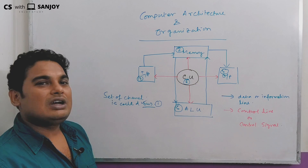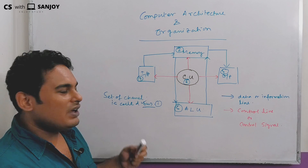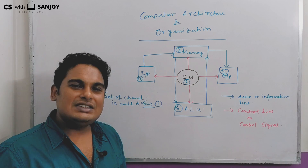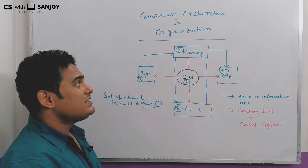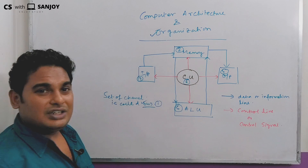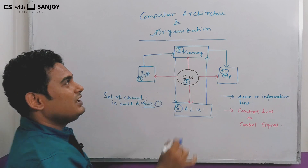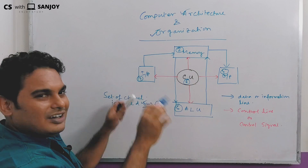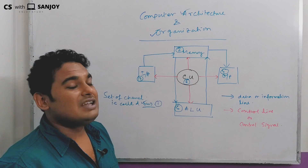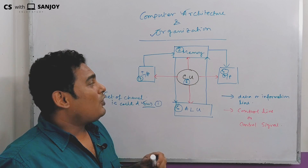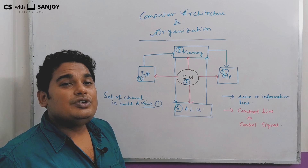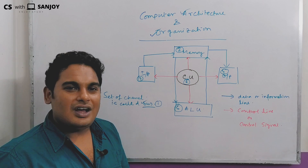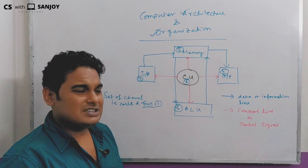At the same time, the components are organized. The architecture part is the designing part — how we integrate them. And the organization part is about how we are organizing the components of the system.